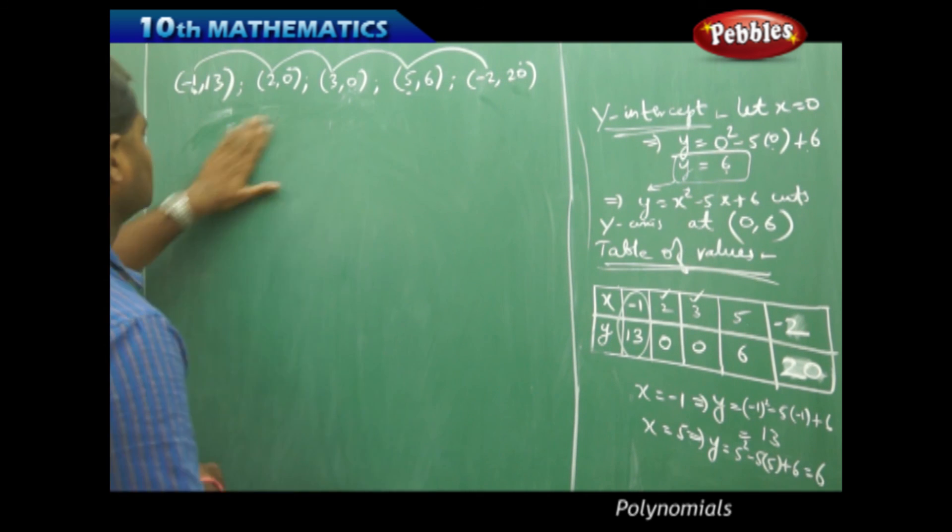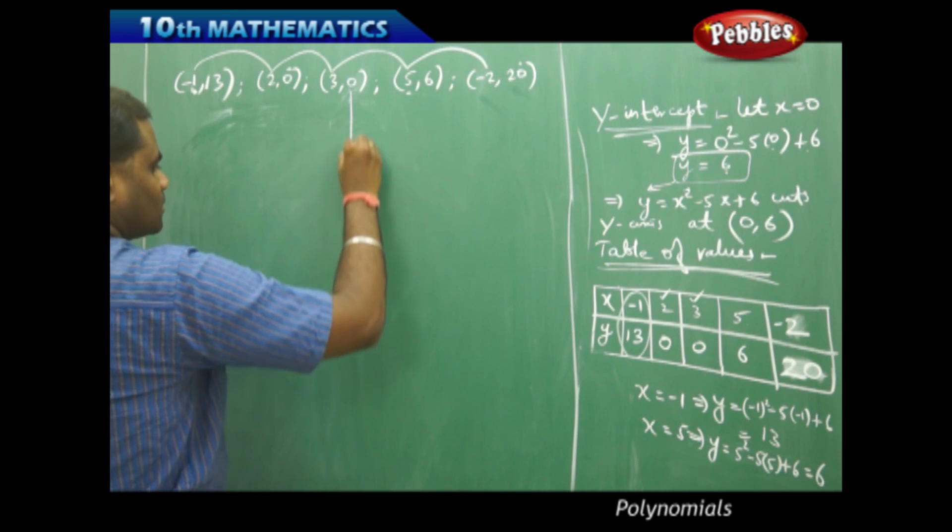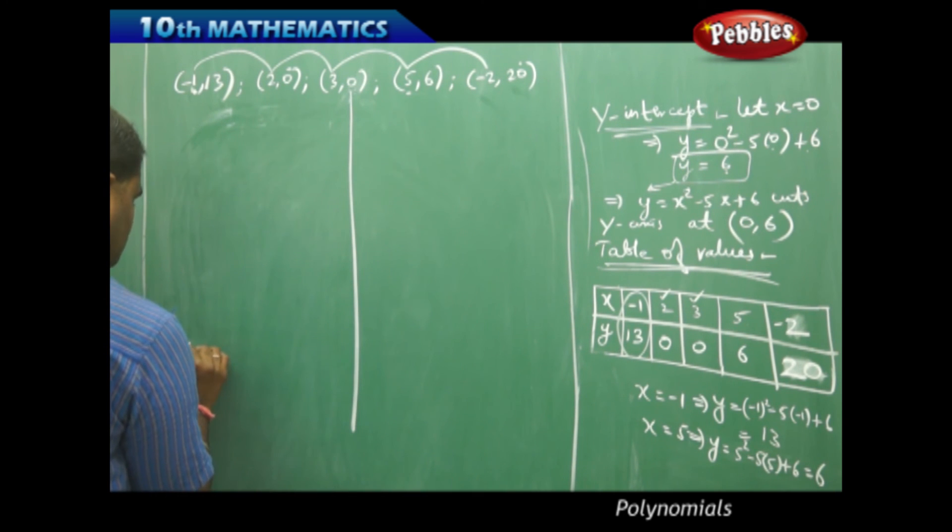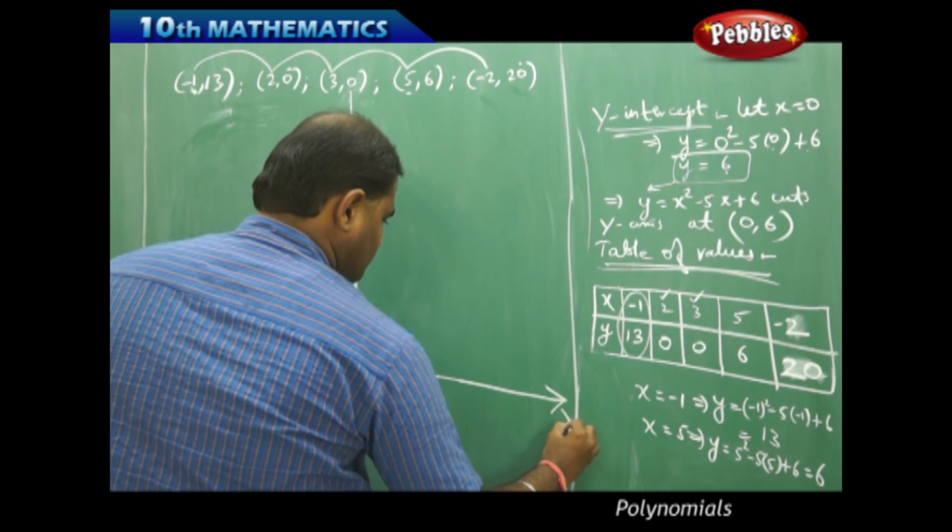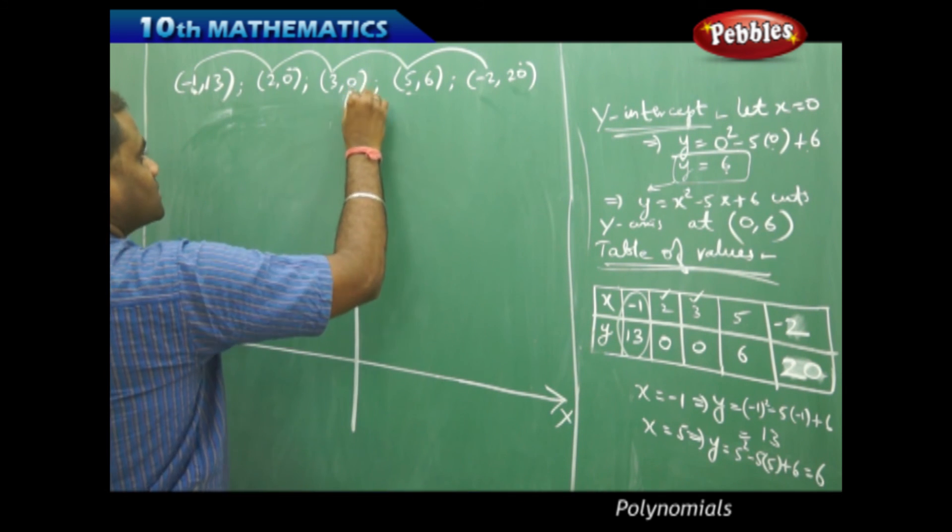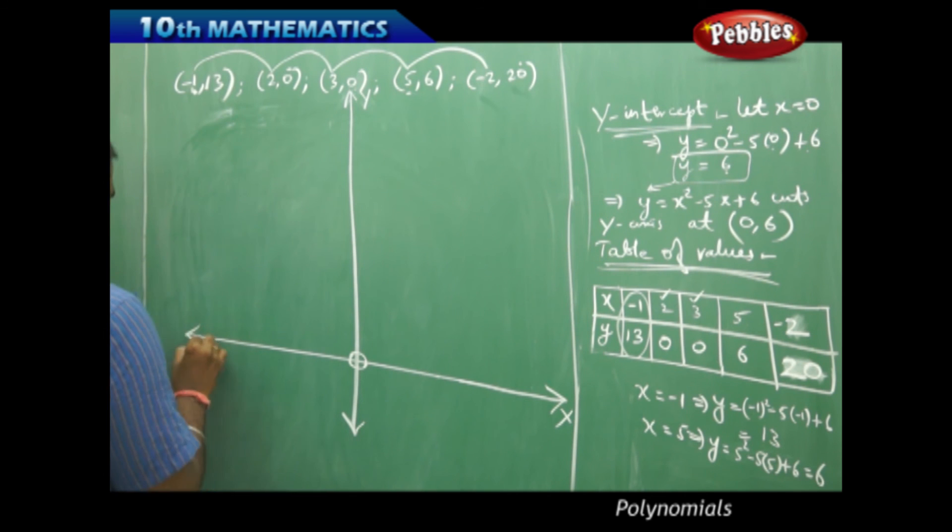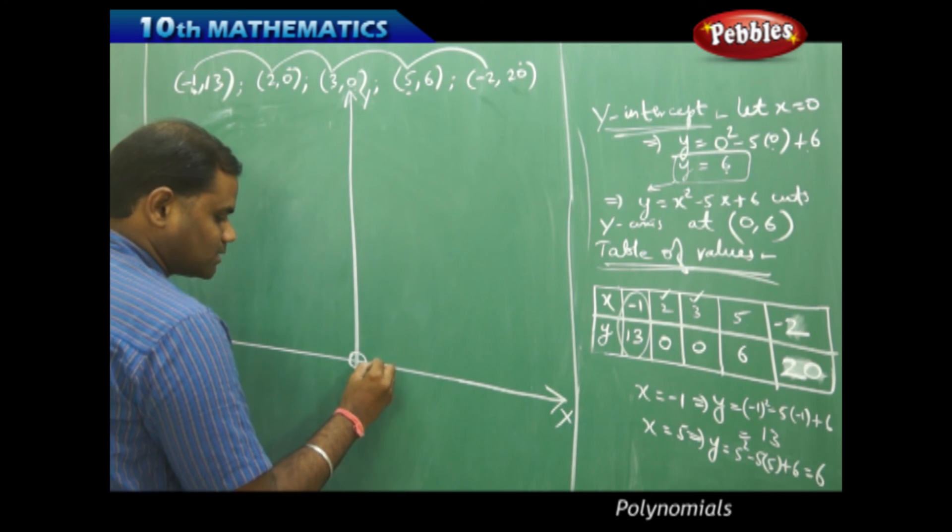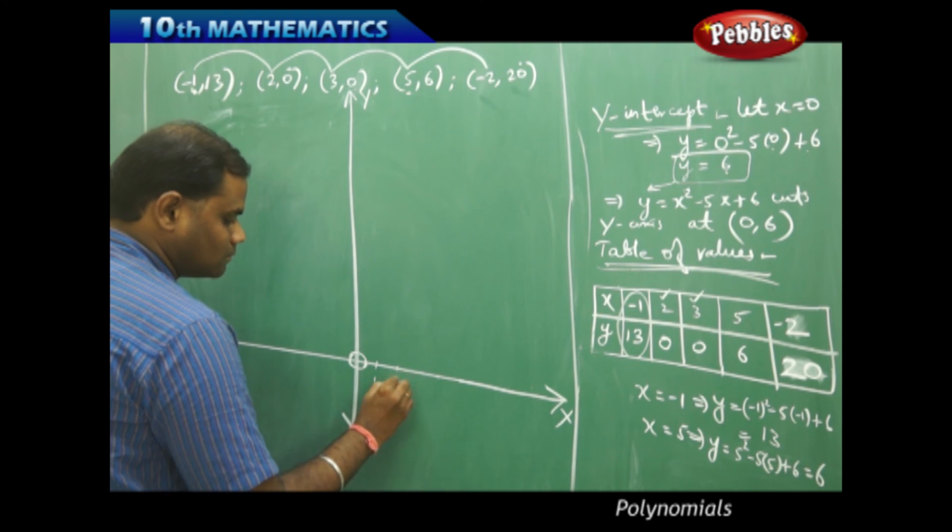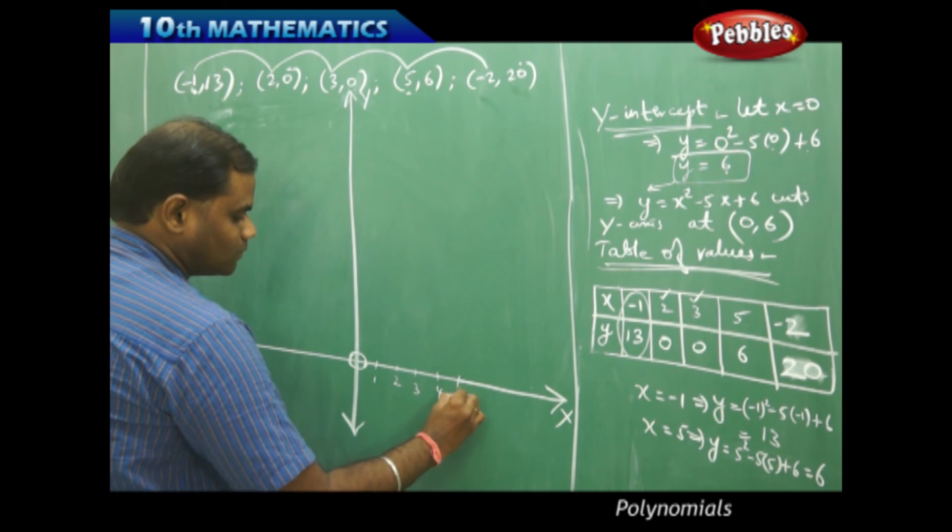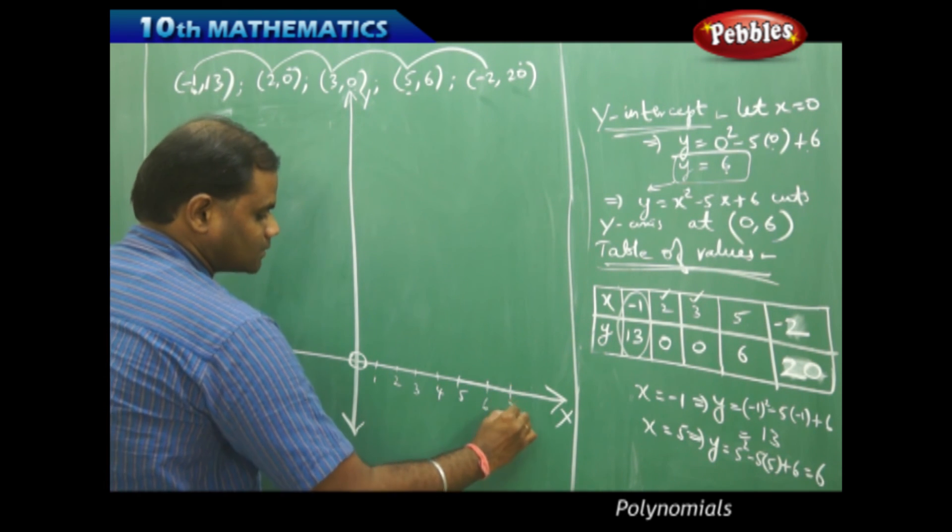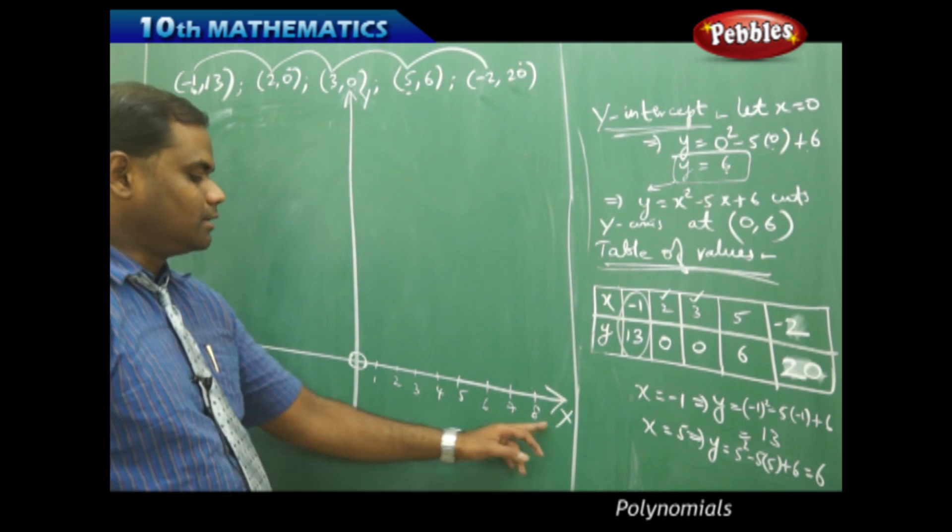So, in this case, let me take the scaling, initially starting with x and y axis. This is x axis and this is y axis and this is origin. To start with, I just take 1, 2, 3, 4, 5, 6, 7, 8, and so on.